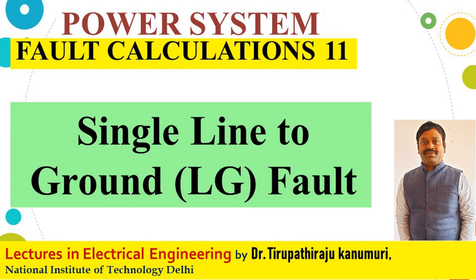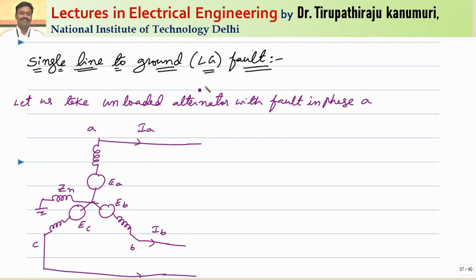Hi all, today we are going to discuss single line-to-ground fault in the transmission system. Let us take an unloaded alternator with the fault happening in the A phase.